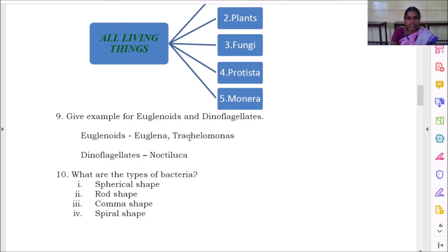How to pronounce this trachelomonas? T-R-A-C-H-E-L-O-M-O-N-A-S. Trachelomonas. So what are the examples for euglenoids here? Euglena and trachelomonas.